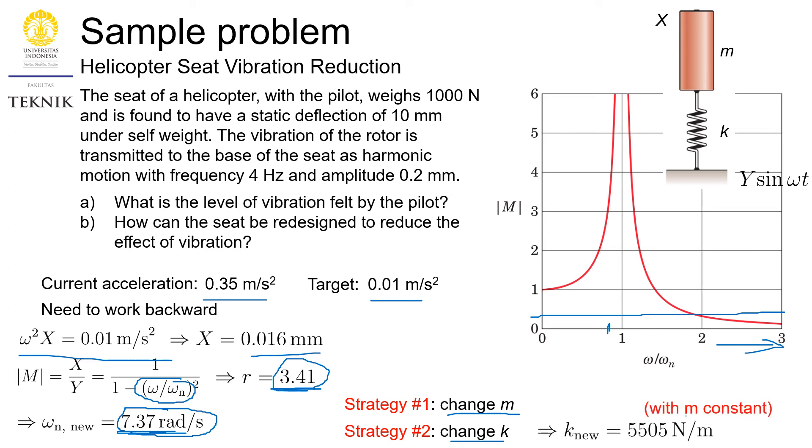And with the value of mass constant, we need to work out that our new k stiffness would be around 5000 Newtons per meter, comparing to the original value. Meaning we need to reduce it by much. We need to make our seating system to be much softer. So how are we able to achieve this? We can try to put additional springs, or we can try to find newer, softer material for the seating. And there are a lot of ways.